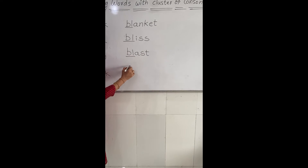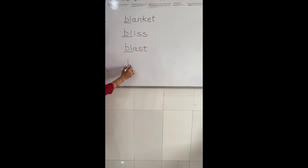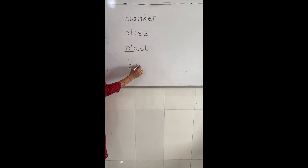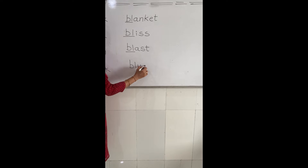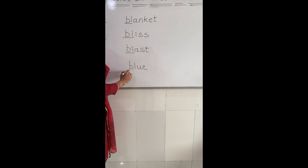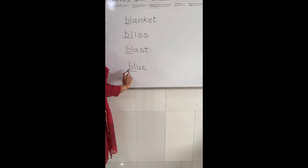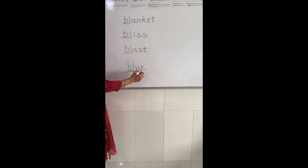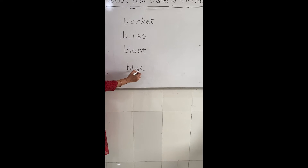The next word is 'blue'. B, L, U, E — blue. So B, L, U, E — blue.